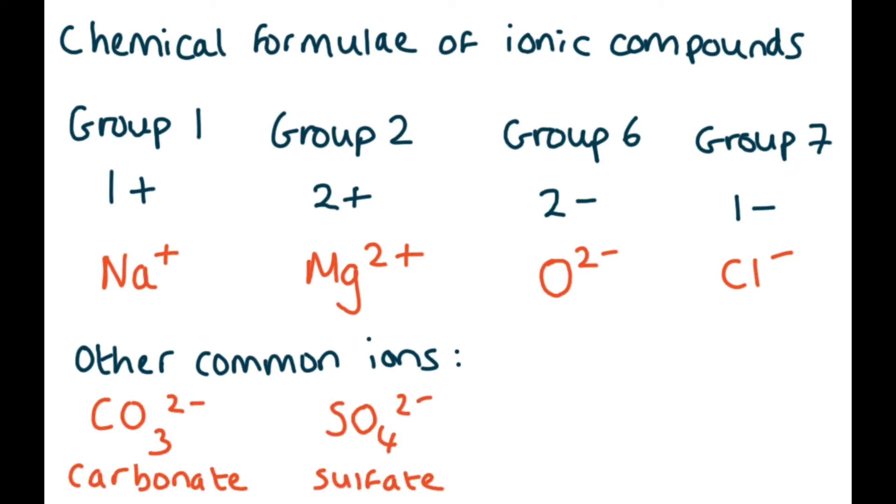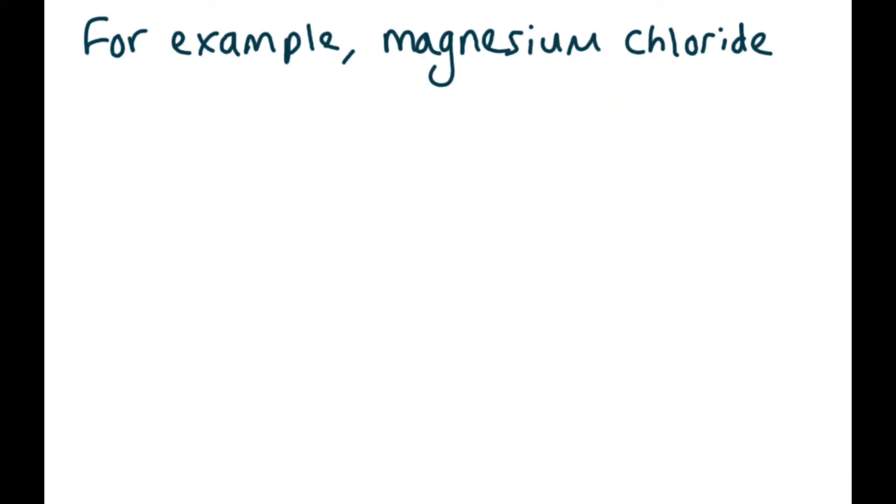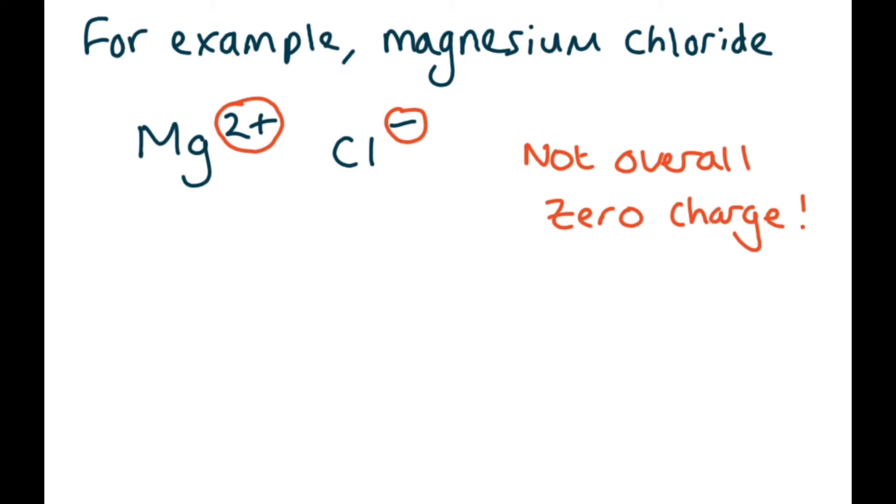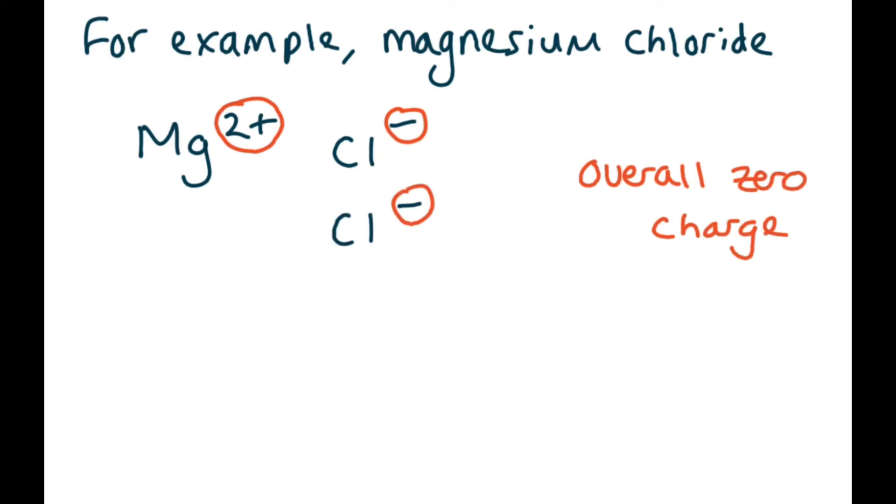Ionic compounds always have zero charge overall. So for example, magnesium chloride: in order to get no overall charge, you're going to need two Cl- ions to cancel out the two plus from magnesium.